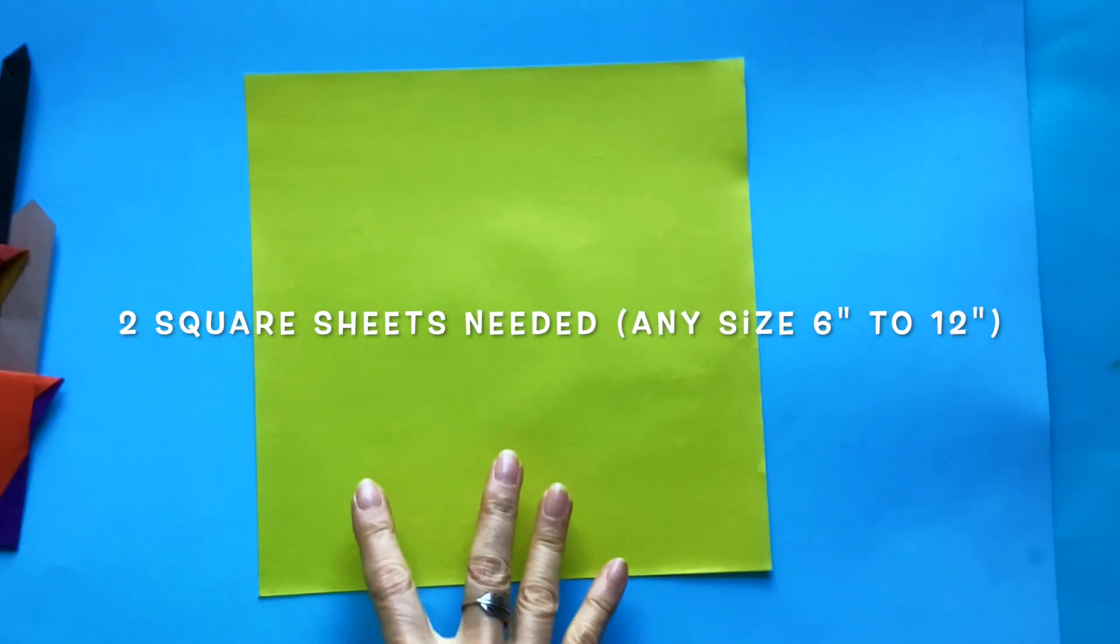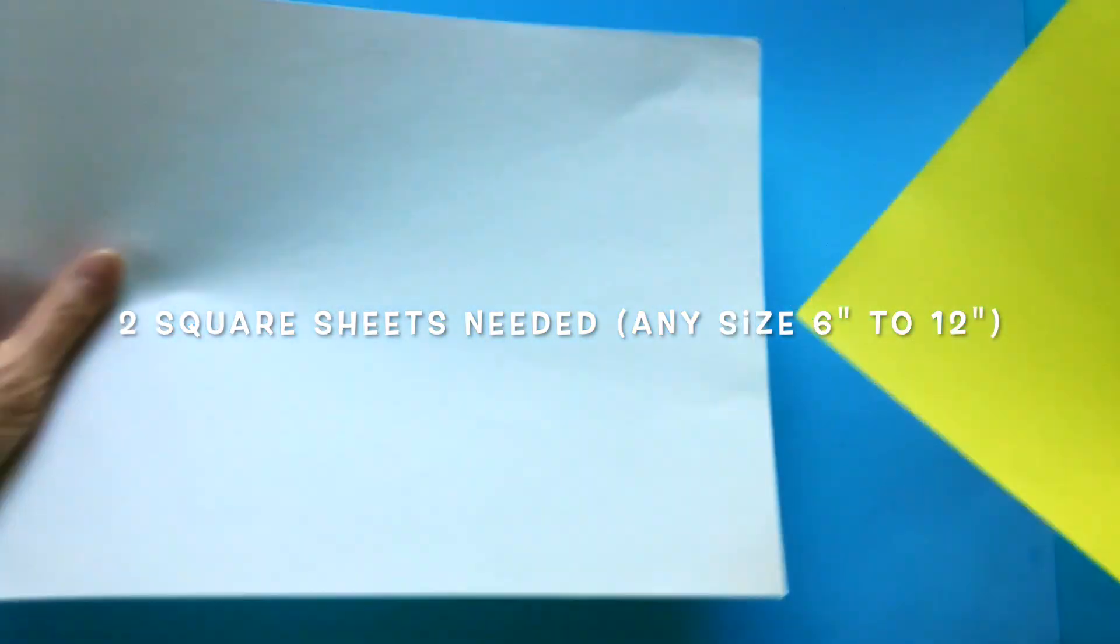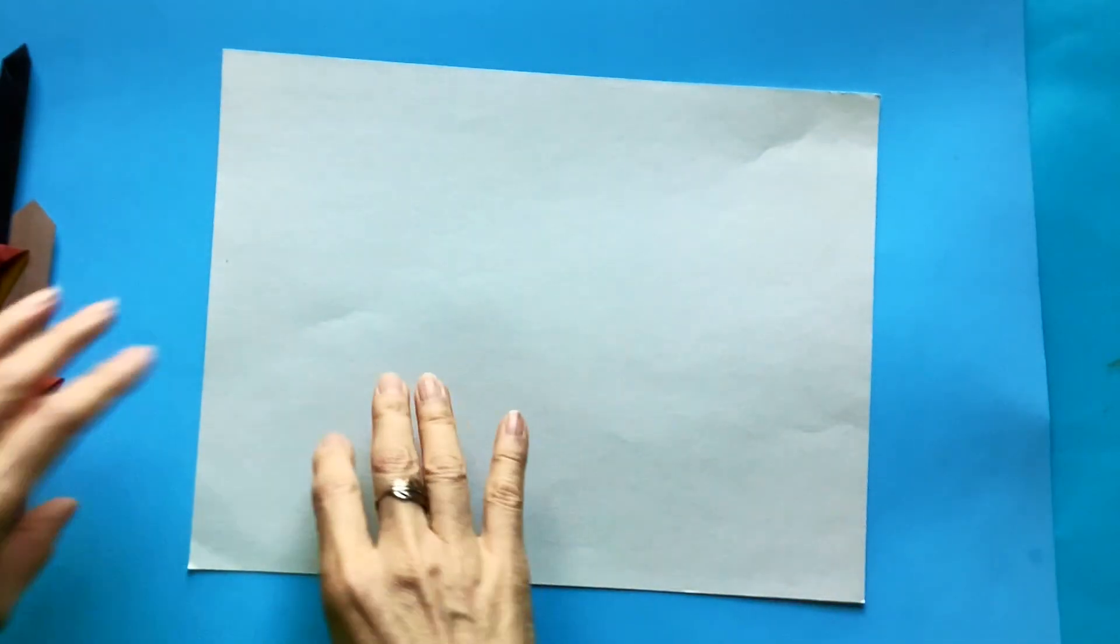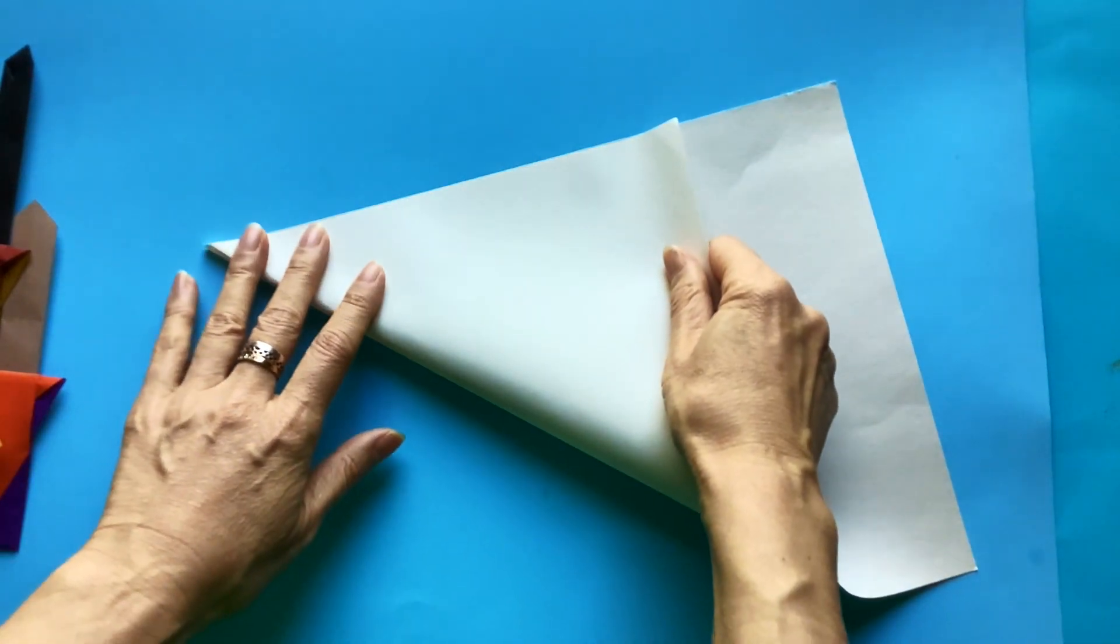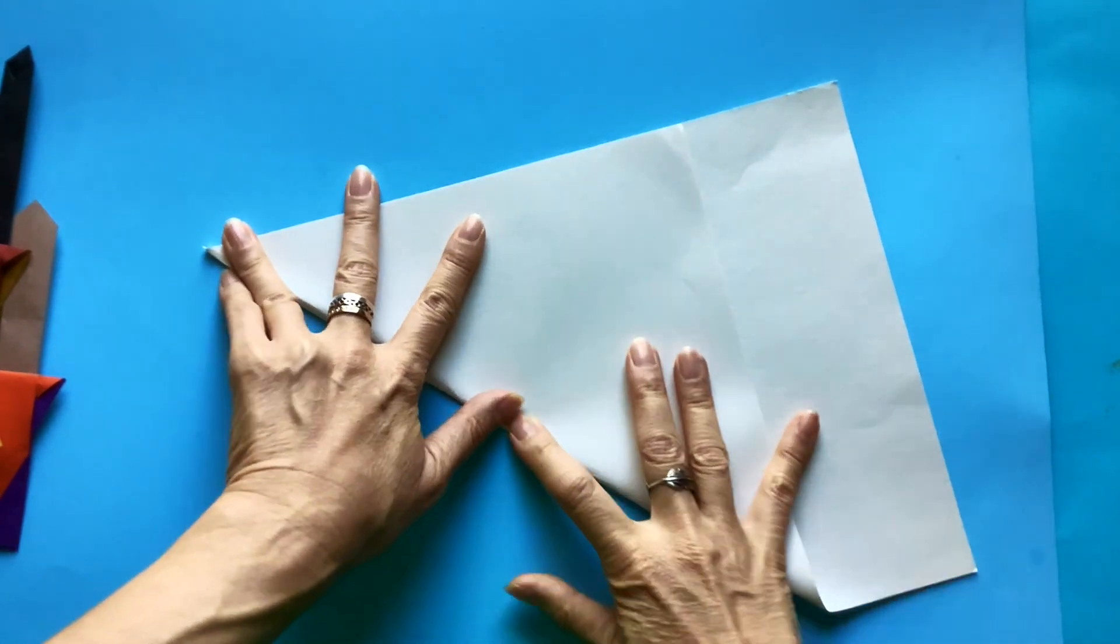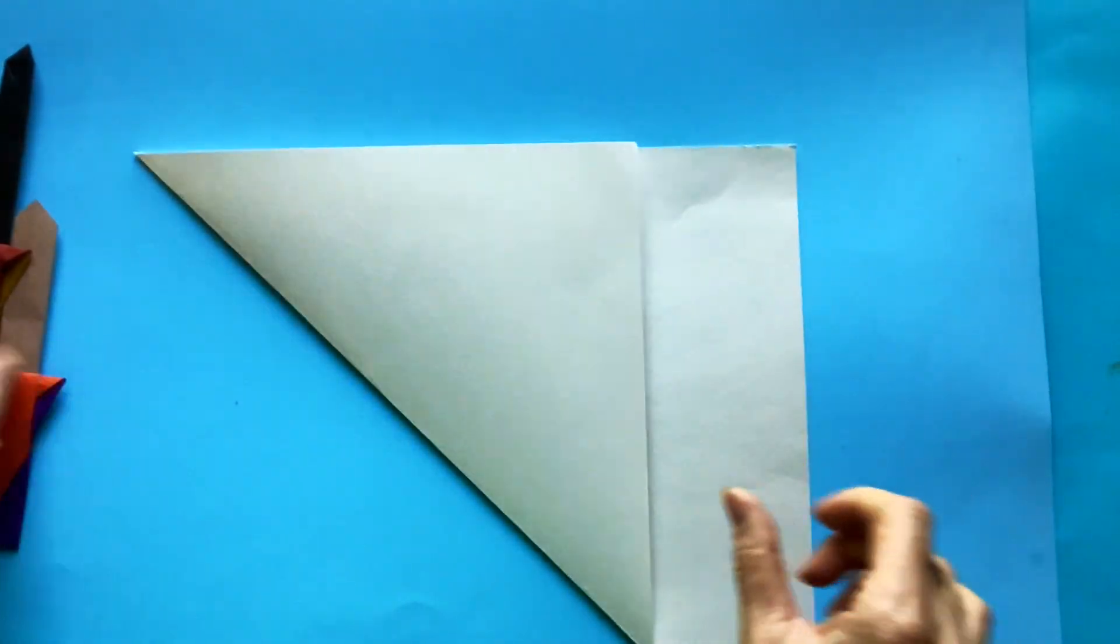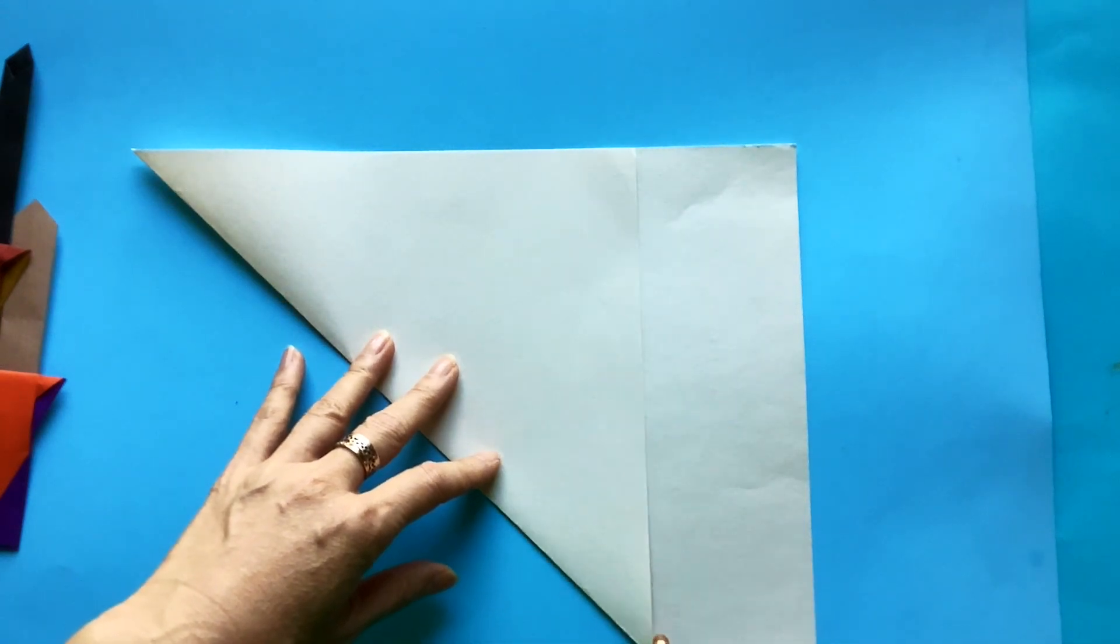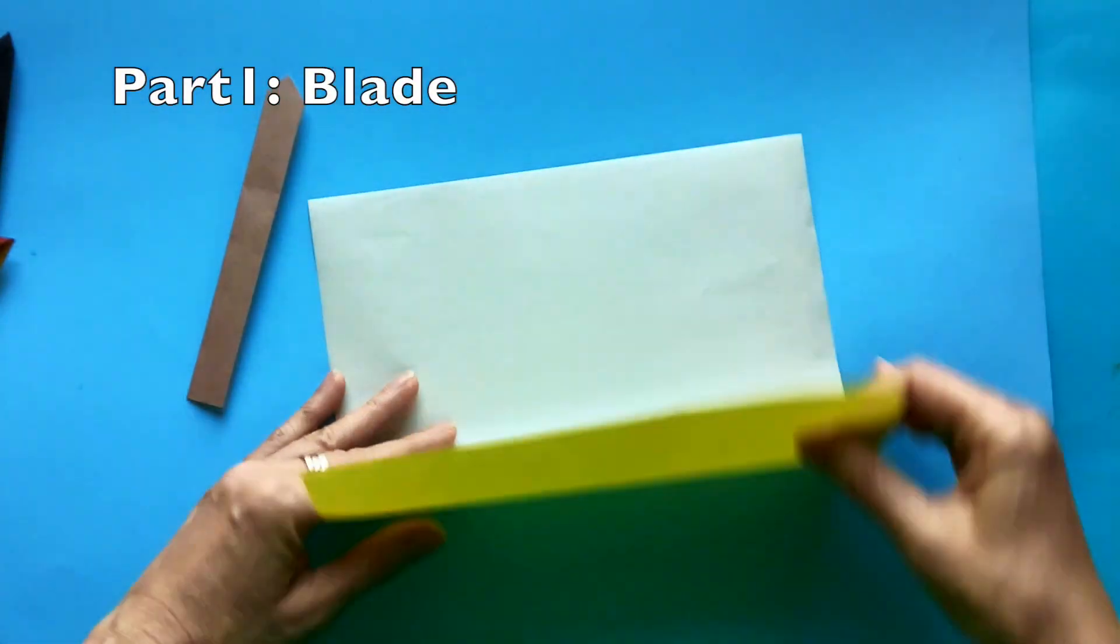You will need two square sheets any size between 6 and 12 inches, and if you don't have a square sheet you can do it from your notebook paper or printer paper by folding the corner to triangle, make a fold and cut on the edge of the triangle. Go ahead and cut it and then bring two sheets.